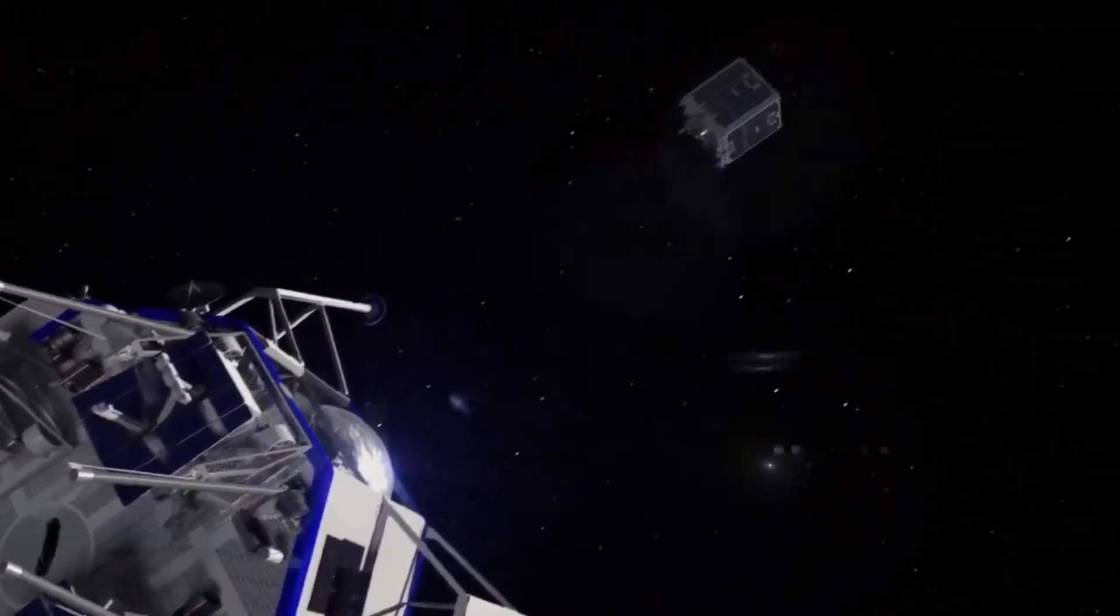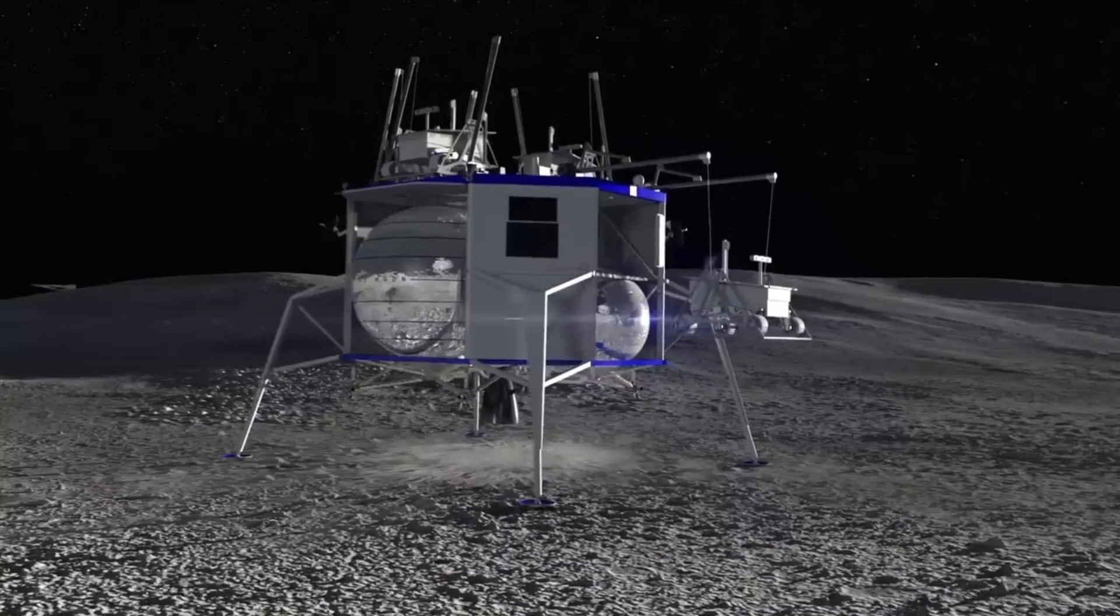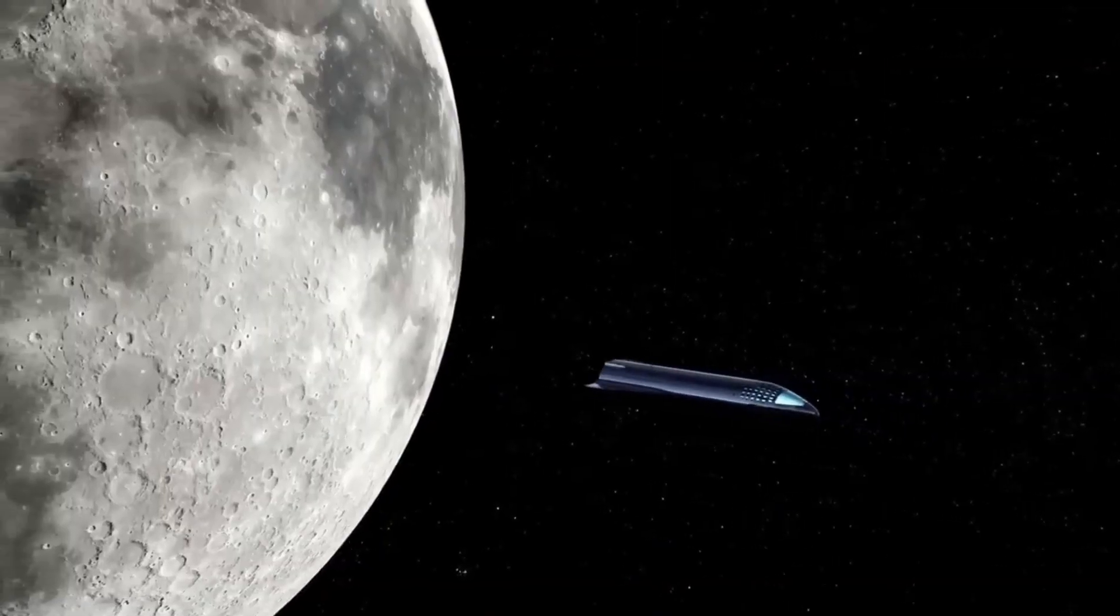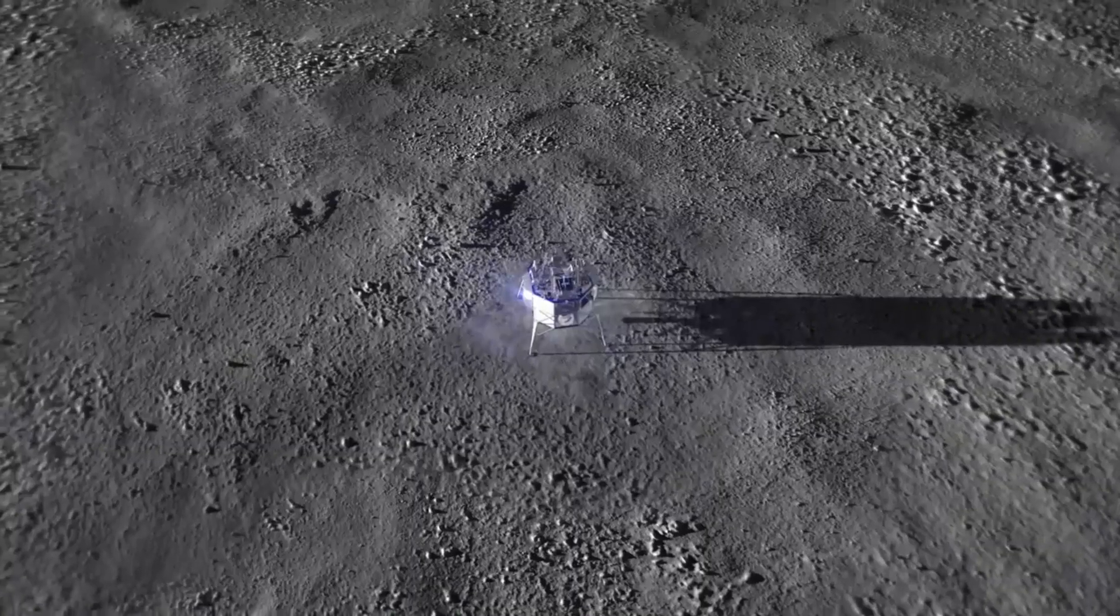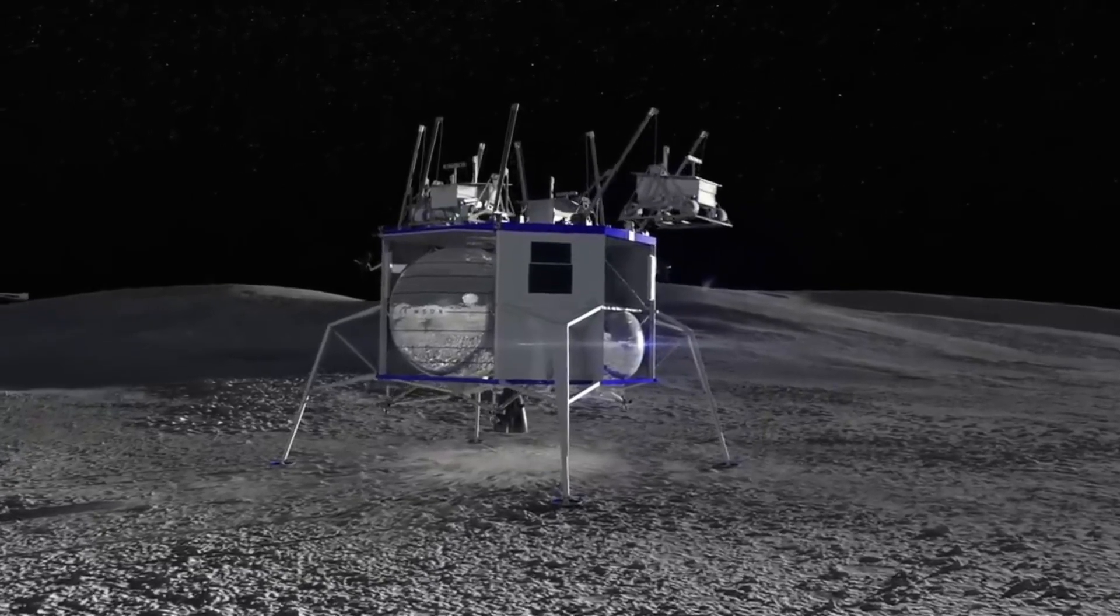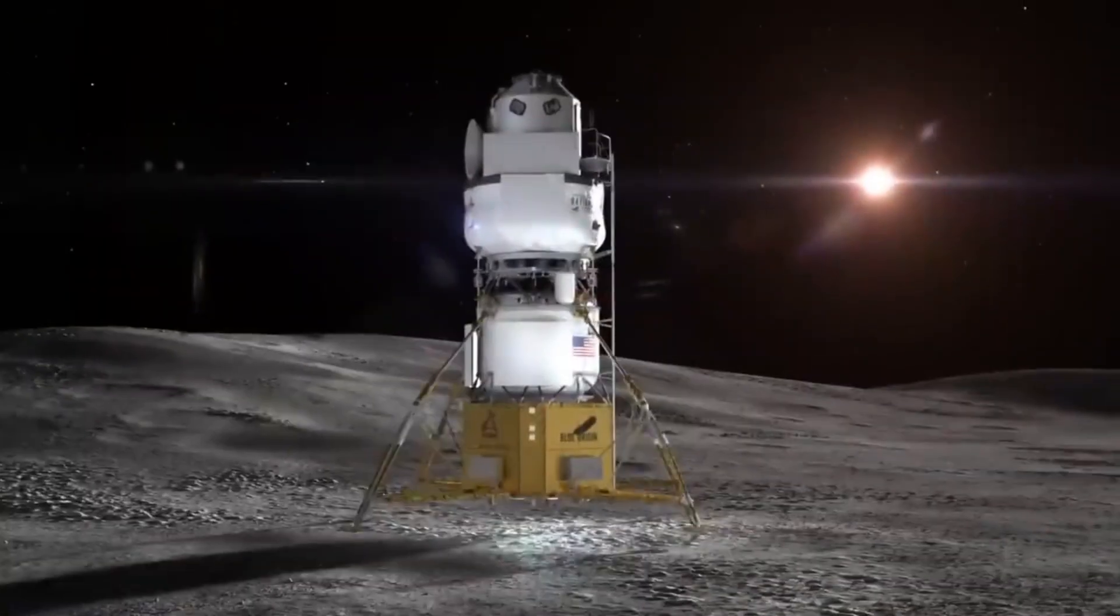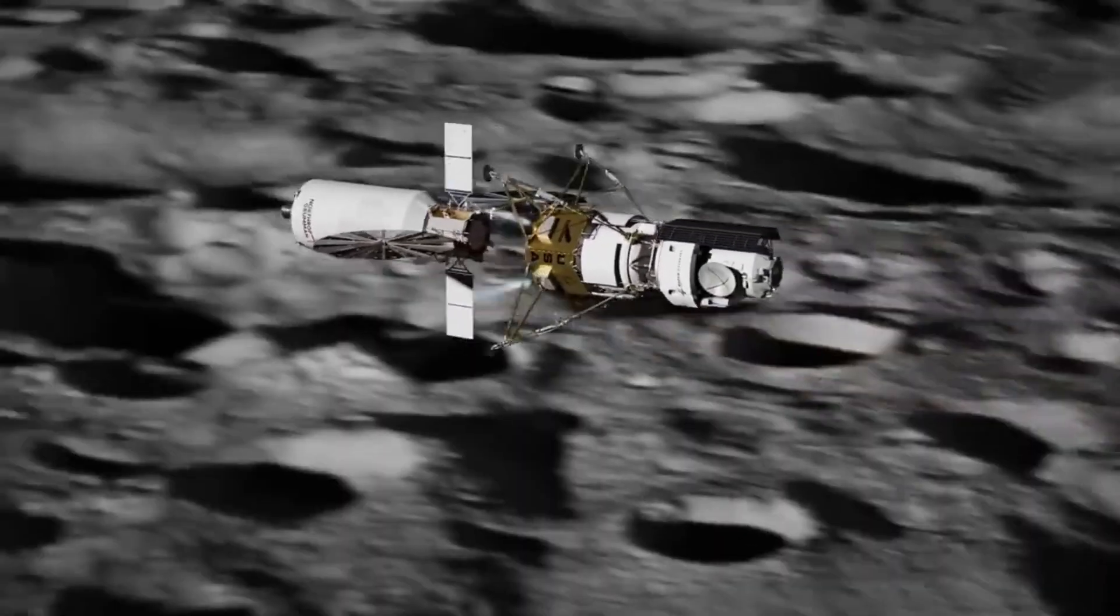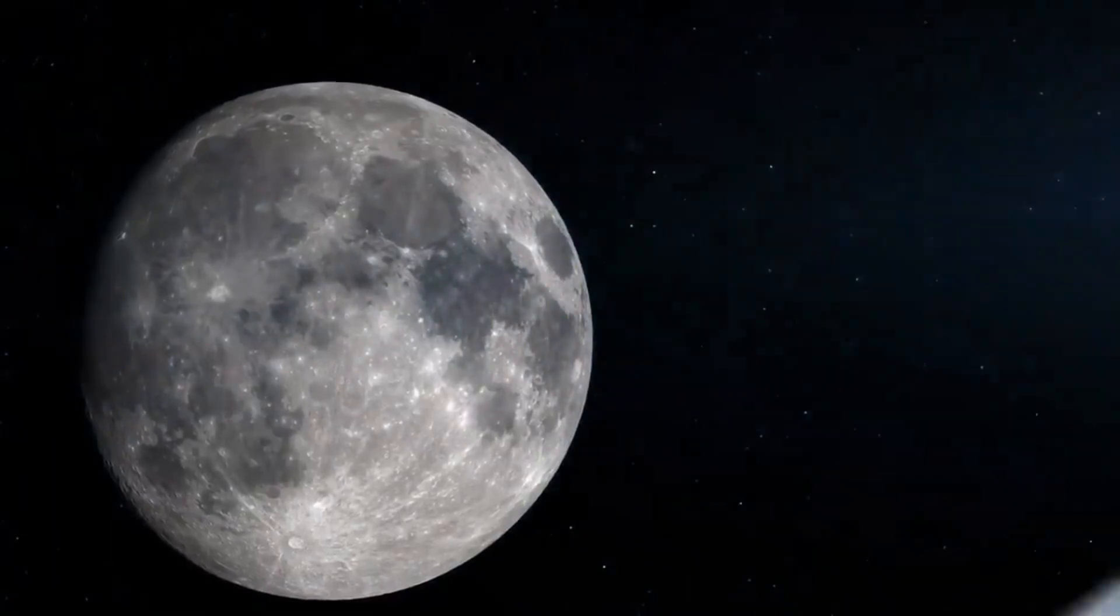In addition, a team led by Jeff Bezos' Blue Origin won a coveted 3.4 billion dollar NASA contract to build a spacecraft to fly astronauts to and from the moon's surface. Blue Origin plans to build its 52-foot, 16-meter tall Blue Moon lander in partnership with Lockheed Martin Corp, Boeing Co, software firm Draper, and robotics firm Astrobotic. NASA picked Blue Origin over a rival bid led by Leidos' Dynetics that also included Northrop Grumman Corp. The goal of this contract is to design, develop, and demonstrate a crewed lunar lander system that can transport astronauts to and from the lunar surface.